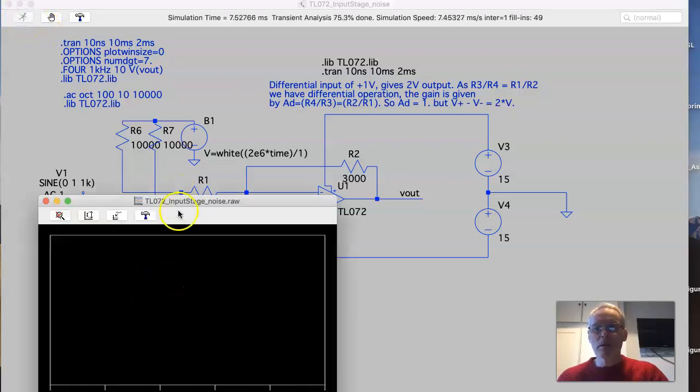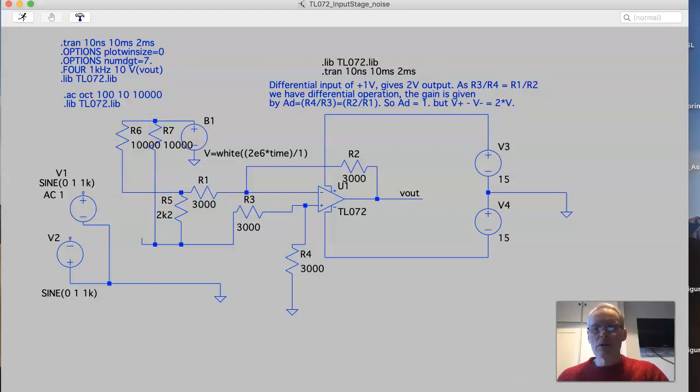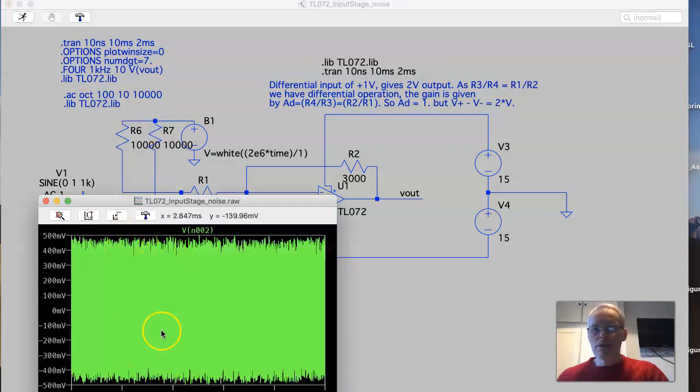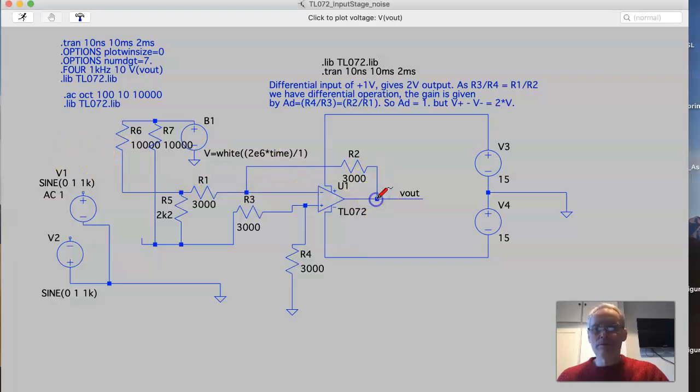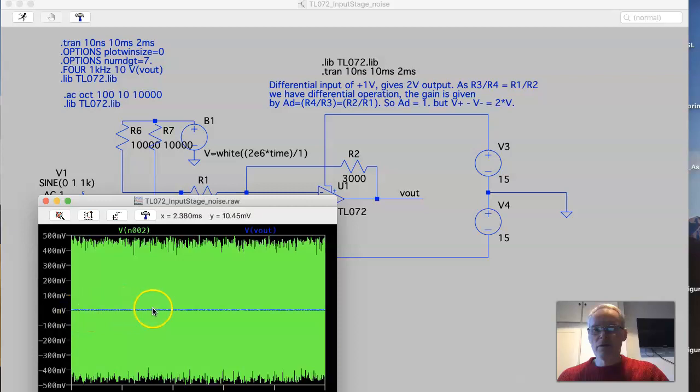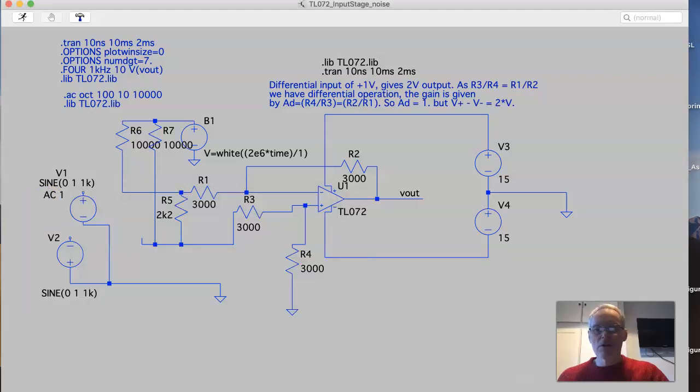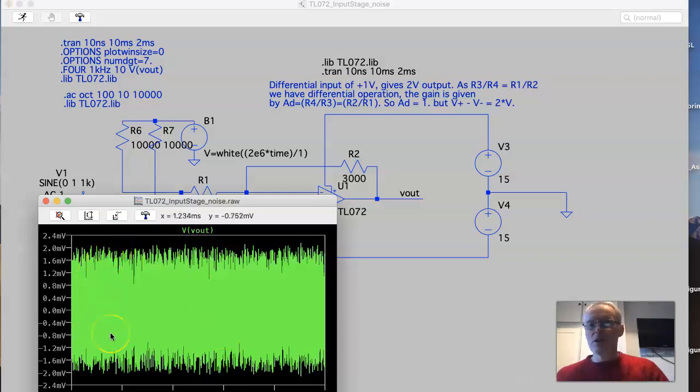If we run the analysis we'll see the noise itself is approximately 1 volt peak to peak going in, and on the output we can see we've got a very low level there. If we zoom in and take a look at that noise, we've got approximately 4 millivolts peak to peak, so pretty good.